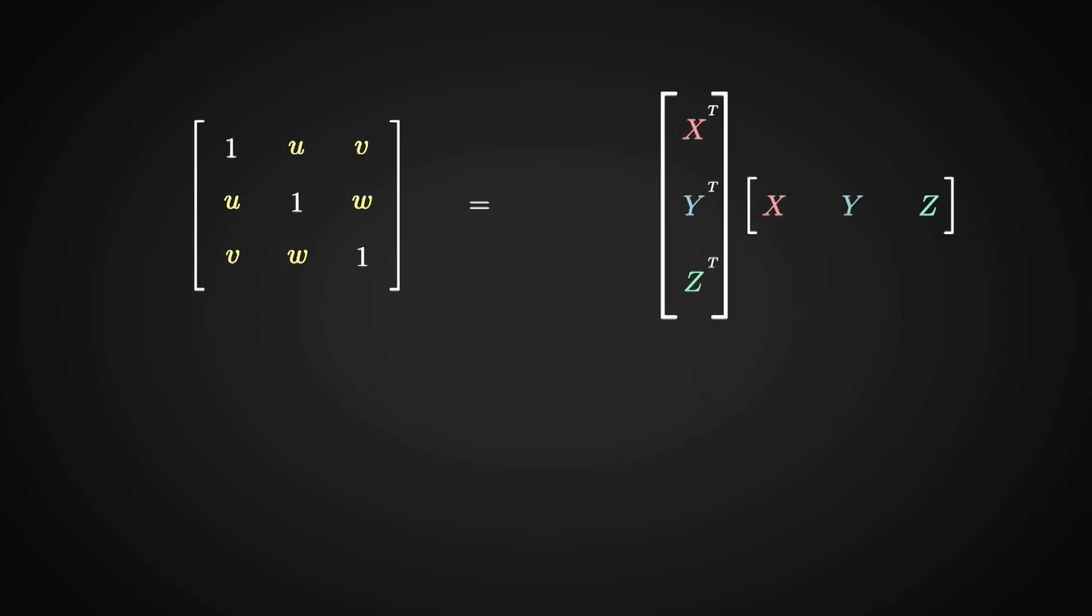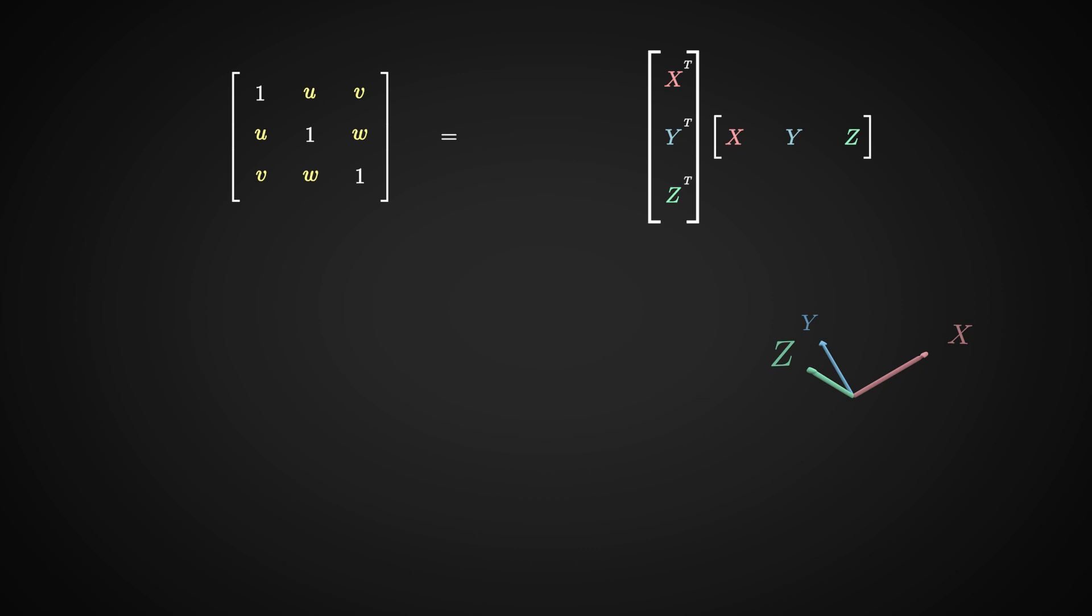What this means geometrically is that if you take any configuration of 3 unit vectors x, y, and z, and you consider their inner products, you get a point u, v, w whose coordinates make this matrix positive semi-definite. And conversely, for every point that makes this matrix positive semi-definite, there exist 3 unit vectors whose inner products are given by the coordinates of that point.